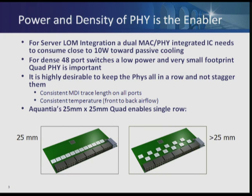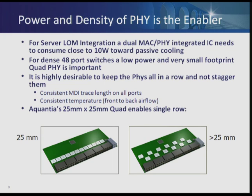For high-speed density switches, it is desirable to fit eight ports of PHY behind a stacked RJ45. The stacked RJ45 basically consists of an RJ45 jack with integrated magnetics. In such a configuration, you have the most board-efficient implementation of the PHY. Your Y dimension is the smallest possible, your MDI traces from the PHY to the MAC jack are the shortest, and from a front-to-back airflow perspective you have a very consistent temperature profile. The Aquantia 25x25 quad is the only product in the world that enables single-row implementation for multi-port switches in the industry today.